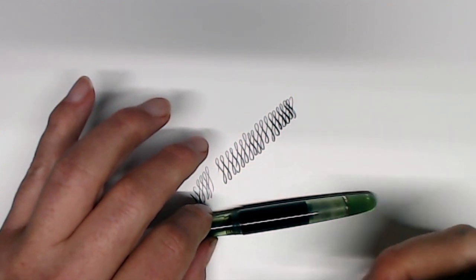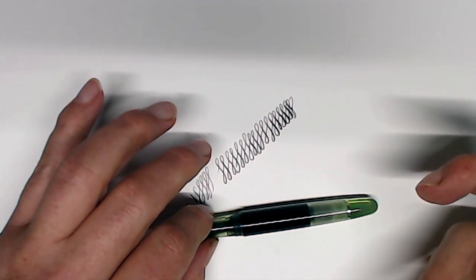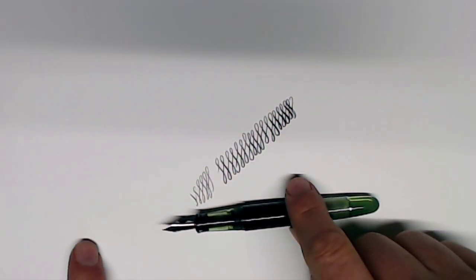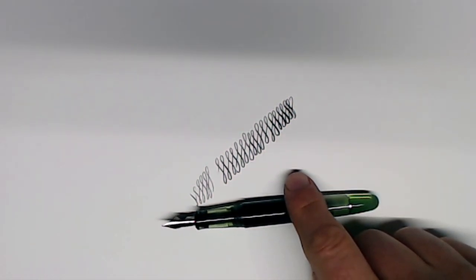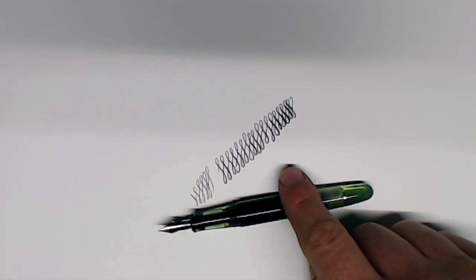Now, that shutoff valve has two advantages. First of all, it prevents burping, which happens a lot with eyedropper filled pens, because your hand can heat up the ink, which can force it out of the feed. So quite often you'll find that eyedropper pens will burp out ink once in a while. This pen does not do that. That's number one. Number two, because you can shut off the main reservoir, it's perfectly safe for airplane travel, which is also really good.